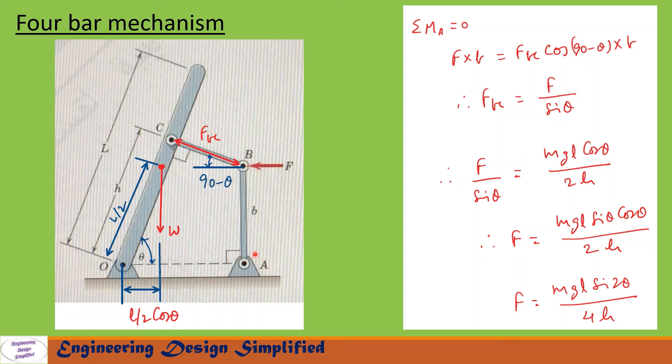Now let us take moments about A for this link AB. Sigma M_A equals zero. F times b equals FBC times the component along horizontal, which is FBC cos(90 minus theta) times b. From this we can write FBC equals F by sin theta, since cos(90 minus theta) equals sin theta.